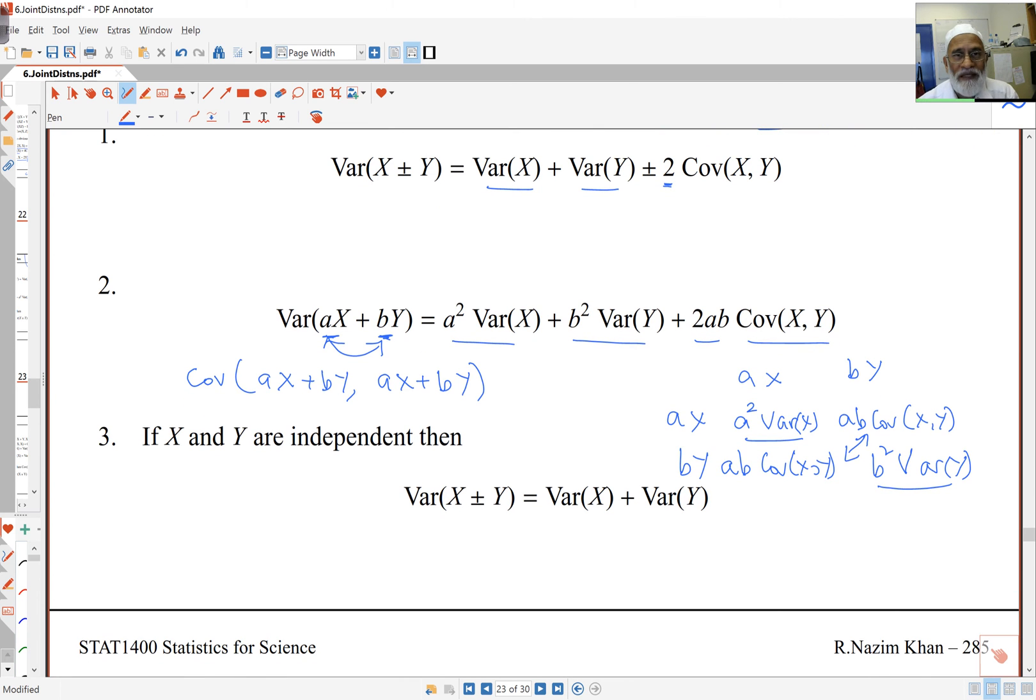If x and y are independent, that's a nice thing to have. The covariance term is 0. The covariance of x, y in this case is 0. So the covariance term disappears, and all I get is the variance of x plus y is the variance of x plus the variance of y. Even with a minus sign, the covariance term disappears. It's still variance of x plus y. So whenever I've got independence, variance of x plus or minus y is variance of x plus variance of y.